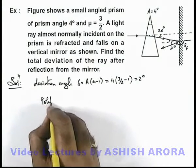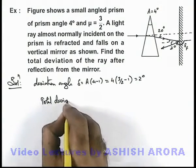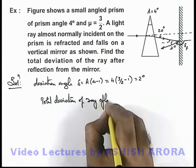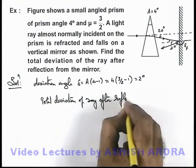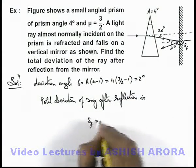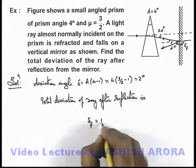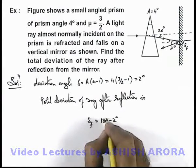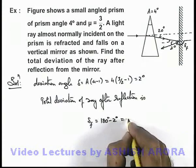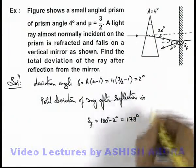Of the ray after reflection is: here we can write delta final equals 180 degrees minus 2 degrees. Because this is a 2 degree angle, which can be directly written as 178 degrees clockwise.